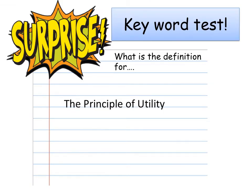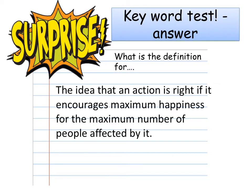Time for another keyword test. Give a definition for the principle of utility. The principle of utility is the idea that an action is right if it encourages maximum happiness for the maximum number of people affected by it.